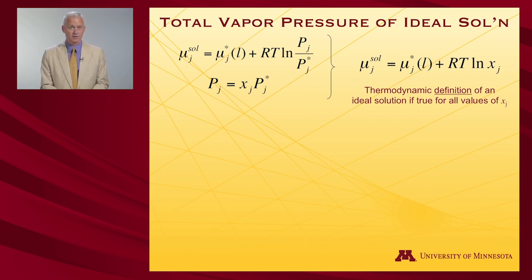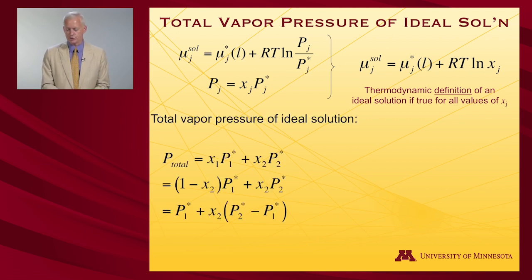That actually also serves as a thermodynamic definition of an ideal solution if it's true for all values of x sub j. So the total vapor pressure of the ideal solution in a binary case: that's going to be mole fraction one times pure liquid vapor pressure of one plus mole fraction two times pure liquid vapor pressure of two. By the definition of mole fraction, x1 is one minus x2, so I can get rid of one of those variables and rearrange this: the total vapor pressure will vary with the amount of component 2 as vapor pressure of liquid 1 plus, as component 2 starts entering, the difference in the vapor pressures of 2 and 1.